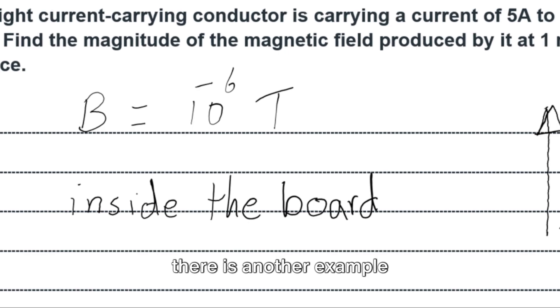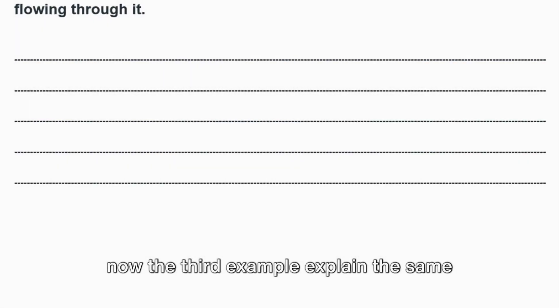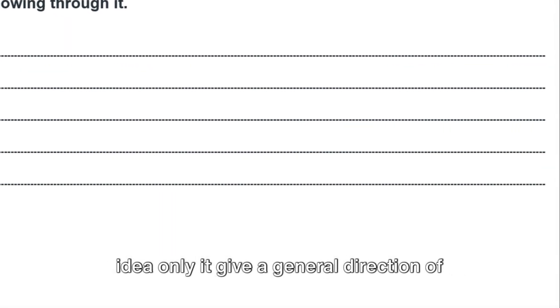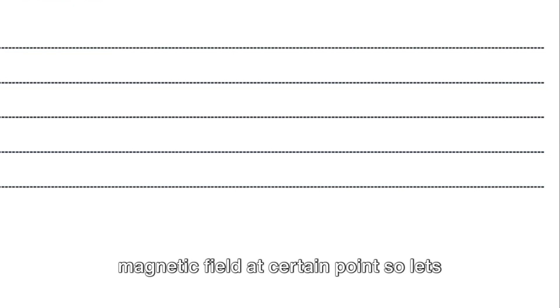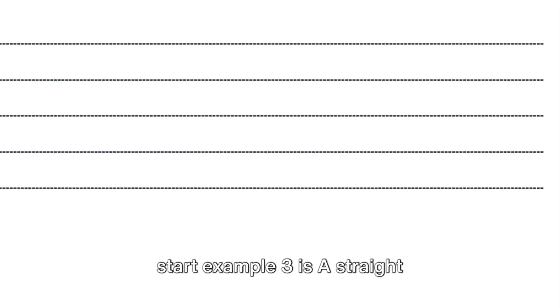Continue practice, don't stop here. There is another example. Now the third example explains the same idea, only it gives a general direction of magnetic field around the wire, not the magnetic field at a certain point. So let's start example three.